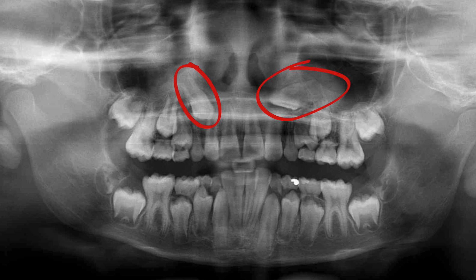If you look at the left canine, it's almost horizontal, very close to or behind the sinus — probably on the palate. It has a very poor eruption path. The more horizontal and the higher the canines are, the harder it is to retrieve them. This left canine has a very poor chance of retrieval.